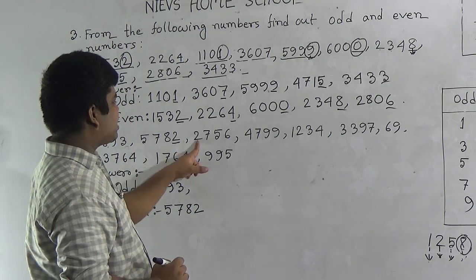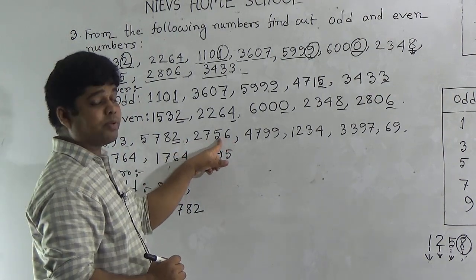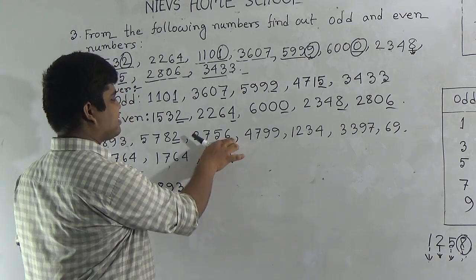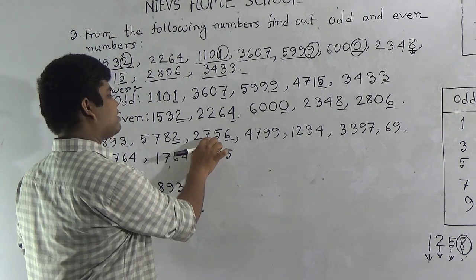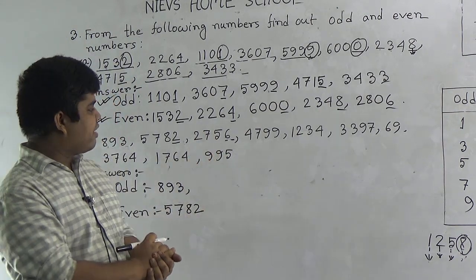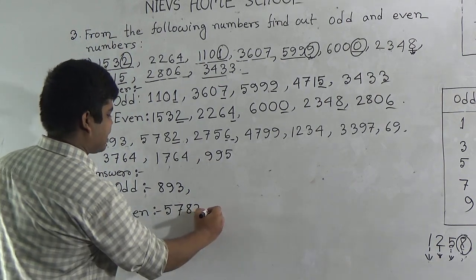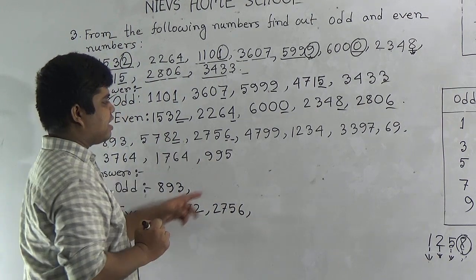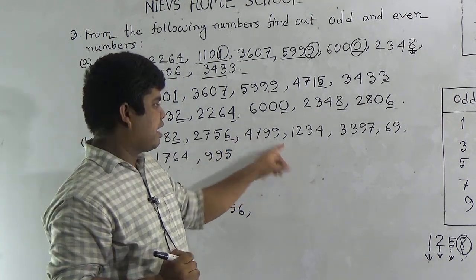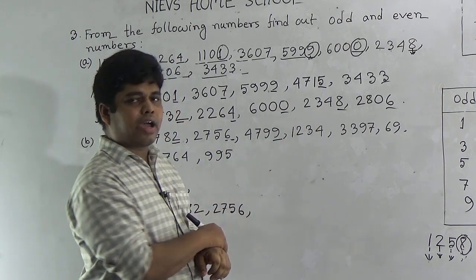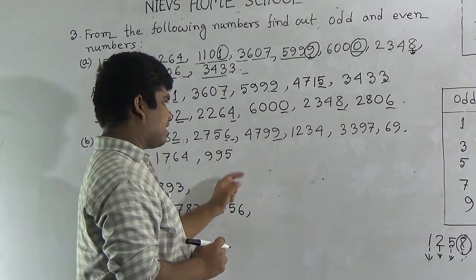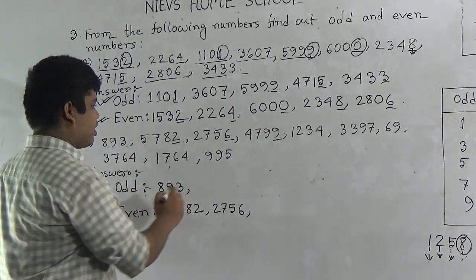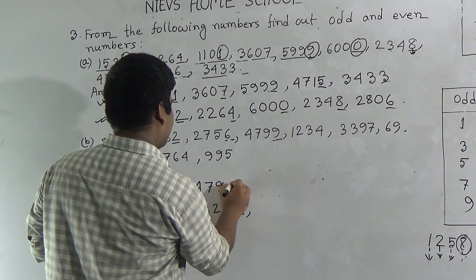Our next number is two thousand seven hundred fifty-six. The ones place digit is six, which is an even number. So two thousand seven hundred fifty-six is even, and we write it in the even number section. Our next number is four thousand seven hundred ninety-nine. The ones place digit is nine. As nine is an odd number, four thousand seven hundred ninety-nine is odd, and it is written in the odd number section.